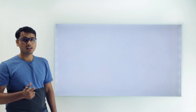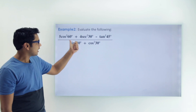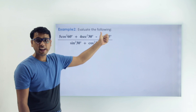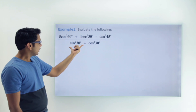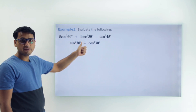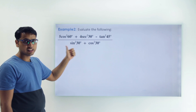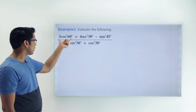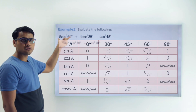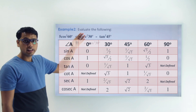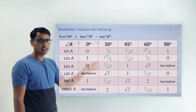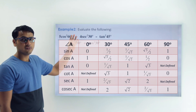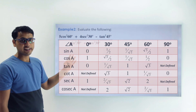Now let's look at our next example. We have to evaluate the value of a given expression. Since we now know the meaning of the notation, we can easily put the values from the table into this expression and find the final result.